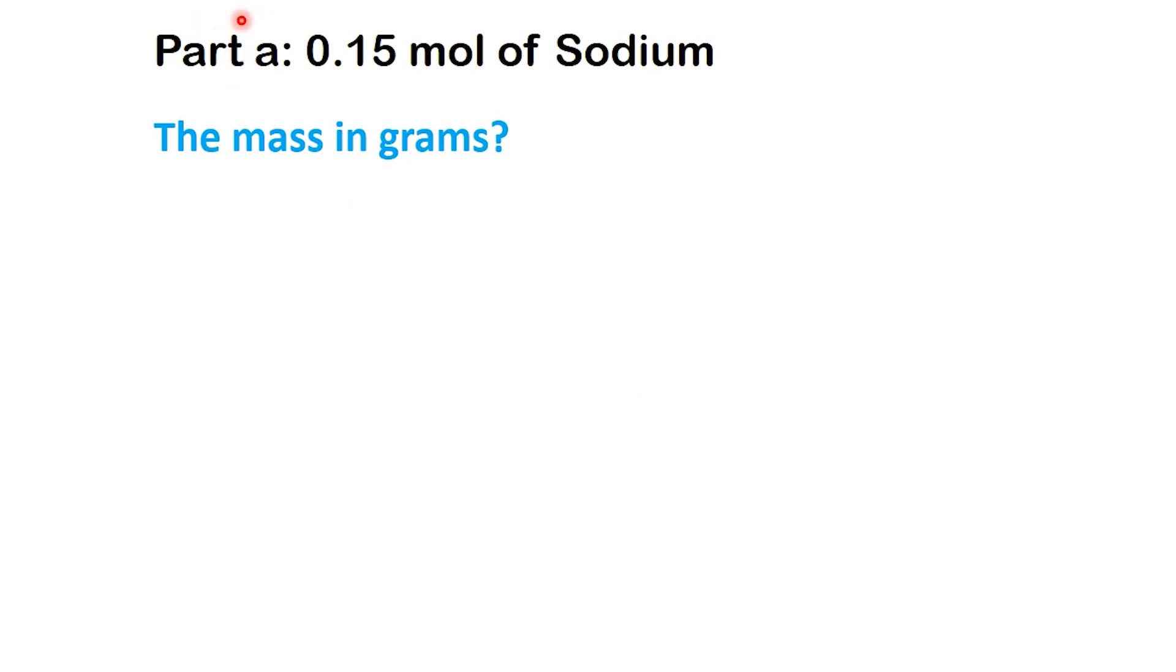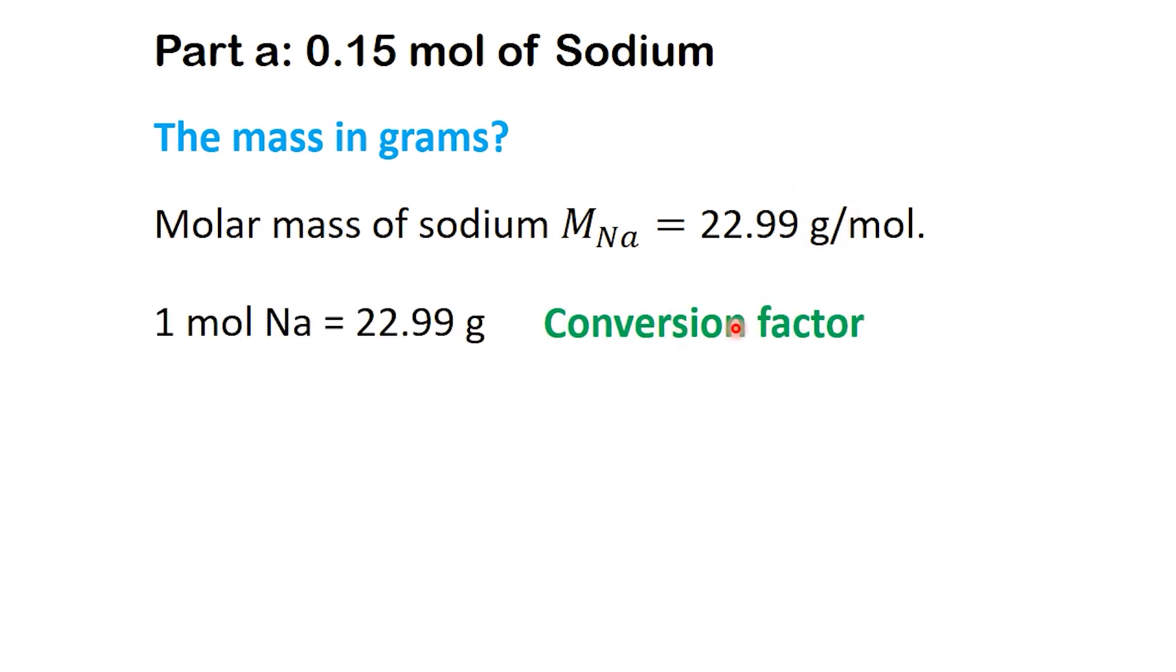Let's start with part A. We're given 0.15 moles of sodium, and we're asked to find the mass in grams. Step 1: Find the molar mass of sodium. From the periodic table, sodium has a molar mass of 22.99 grams per mole. This gives us our conversion factor: 1 mol Na equals 22.99 grams.